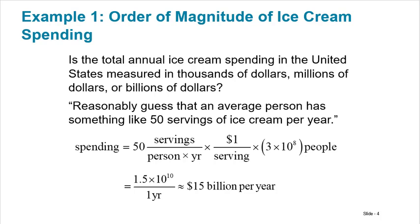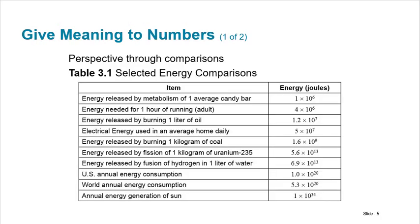So here's an example. Is the total annual ice cream spending in the United States measured in thousands of dollars, millions of dollars, or billions of dollars? So we can reasonably guess that an average person has something like 50 servings of ice cream per year. That's almost one a week. So 50 servings per person per year times a dollar per serving times 3×10^8 people because that's 300 million people that are in the United States. And we get basically 15 billion dollars per year. So that is a gross estimate. We estimate everything. But based on this assumption it puts us on the order of magnitude of billions. That means we're spending billions of dollars per year on ice cream. So that's what we're talking about. Understanding the magnitude of numbers.